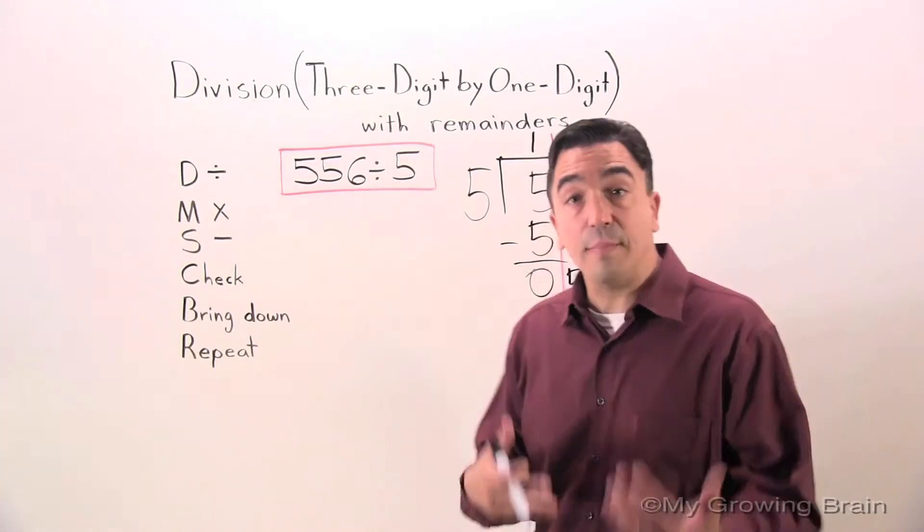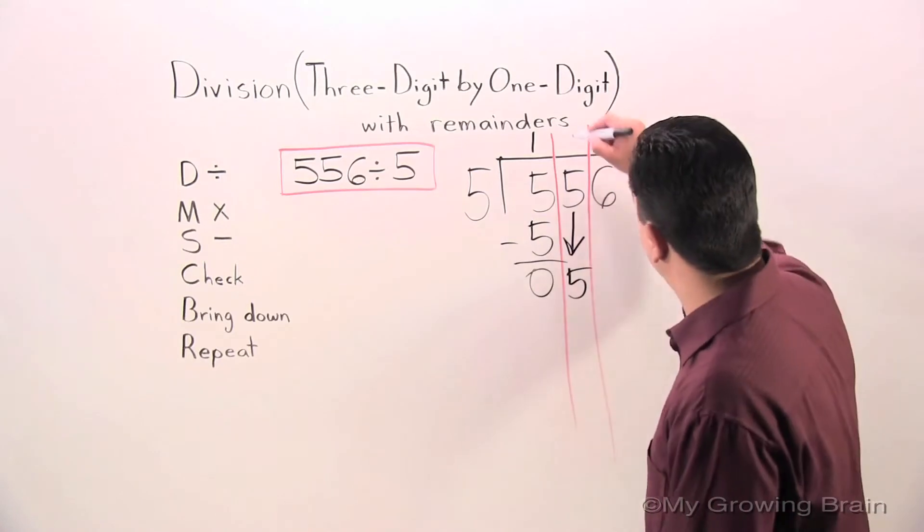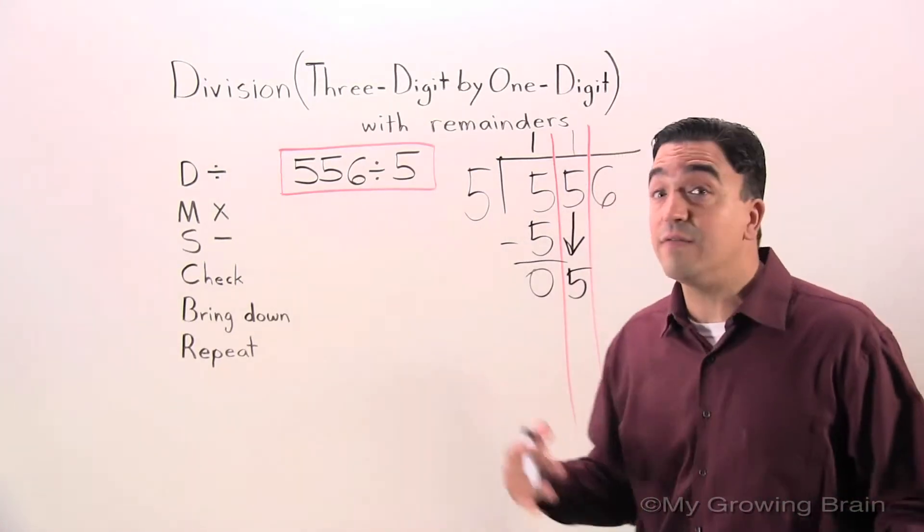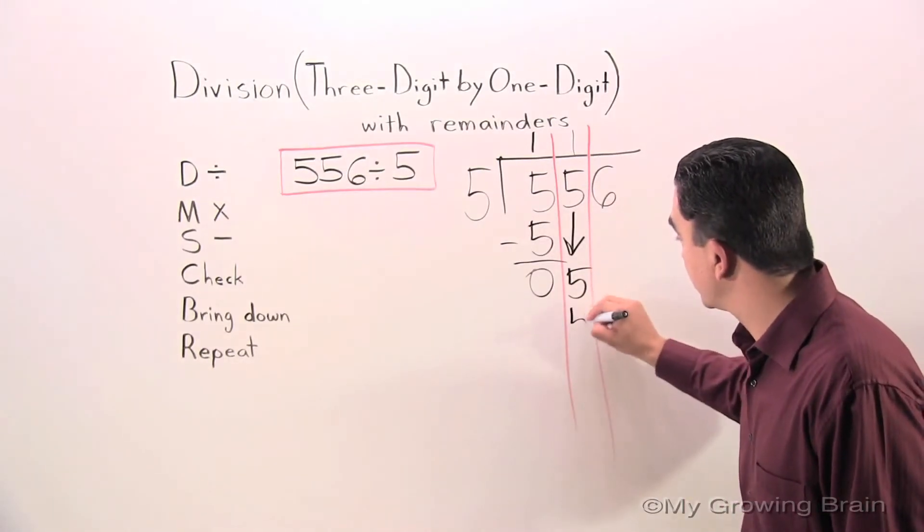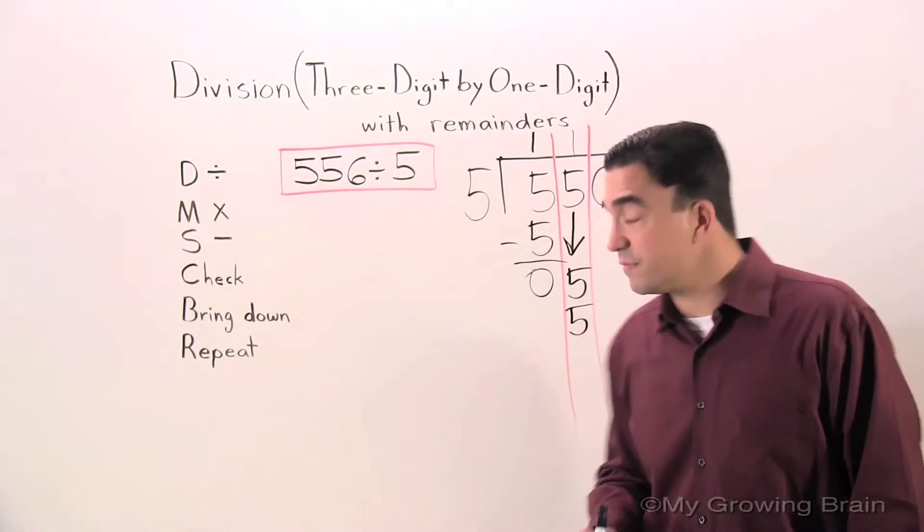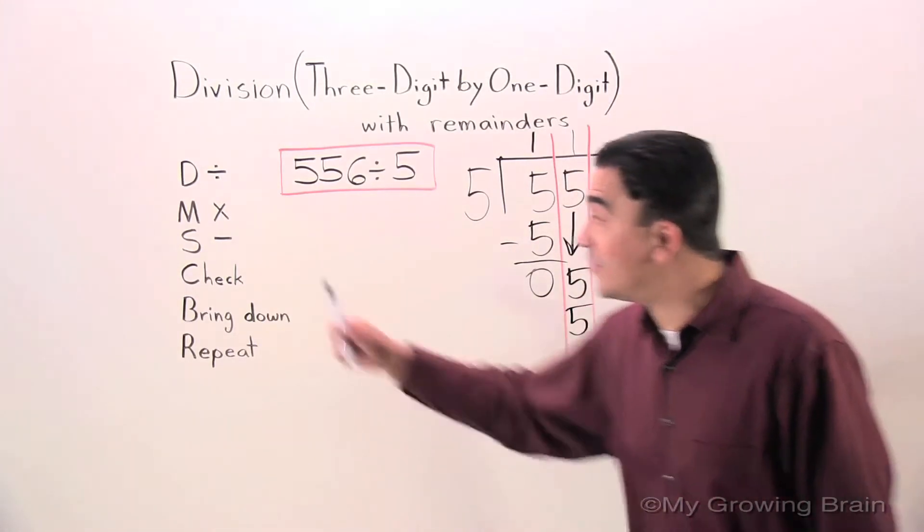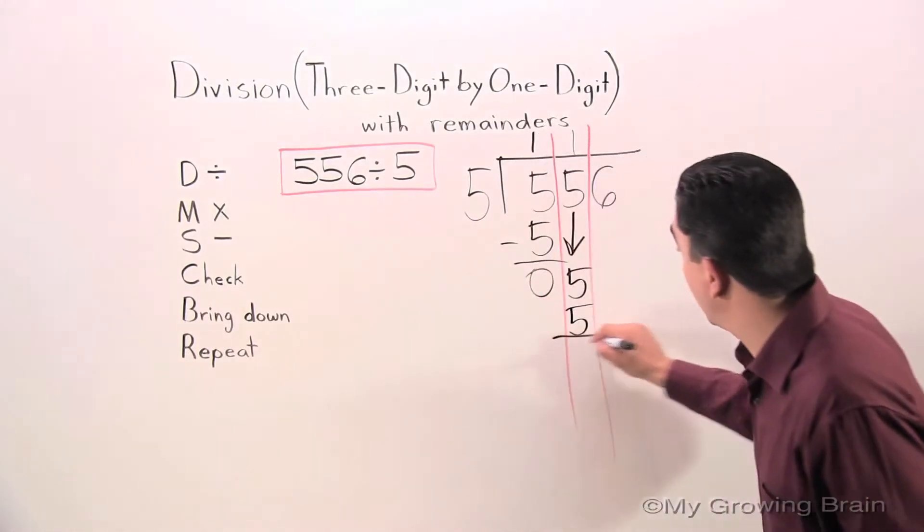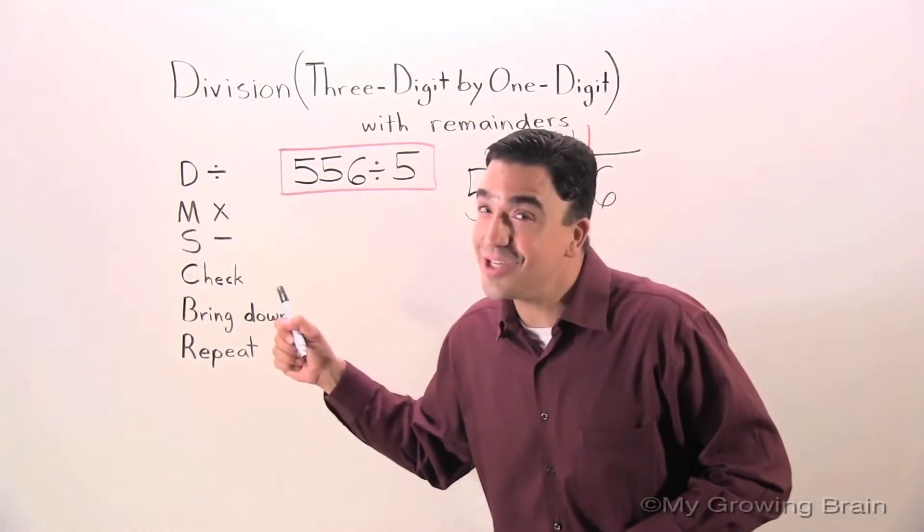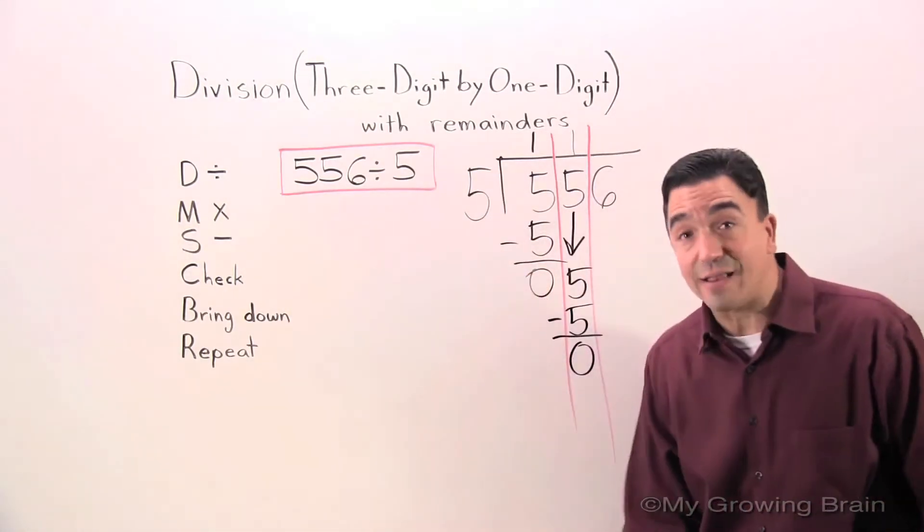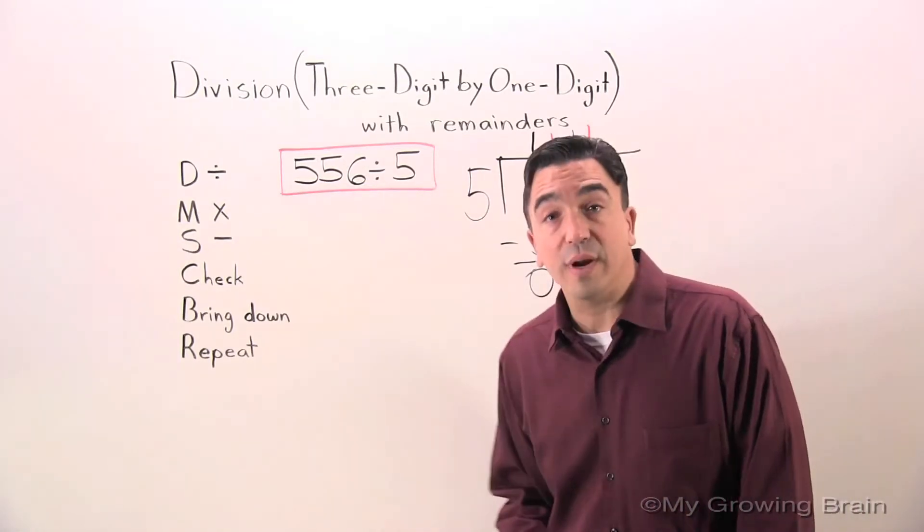Repeat. Repeat the process. Go back to divide. Five into five, one time, or five divided by five. Multiply. Five times one, five. Check. We don't check first. We subtract first. Keep it in order. Five minus five, zero. Now we check. This is smaller than that. The zero is smaller than the divisor. Therefore, I can bring down.